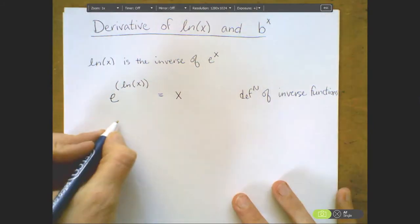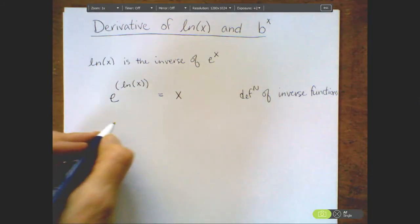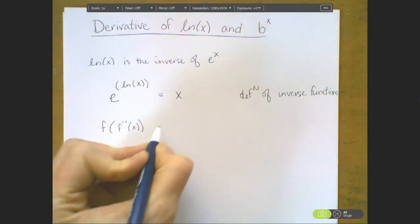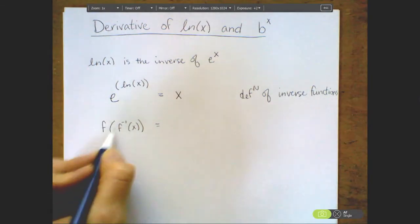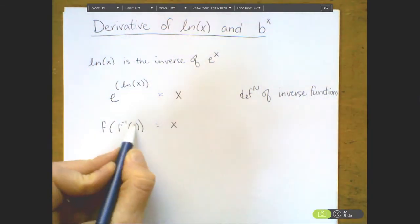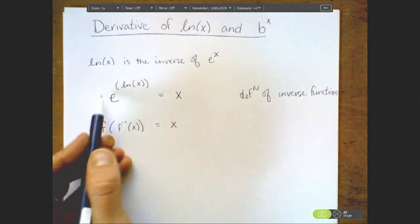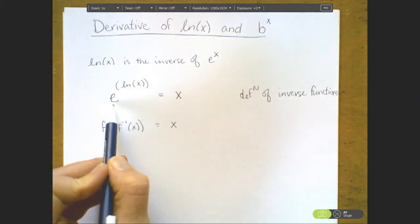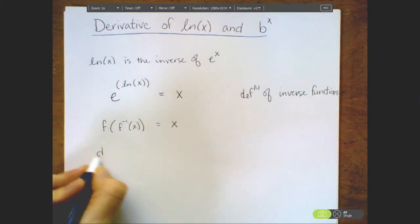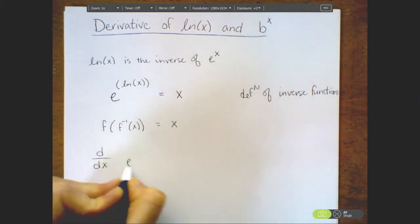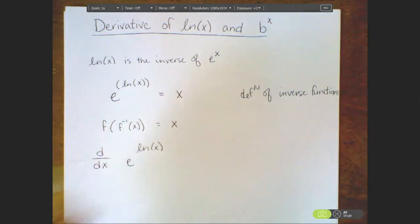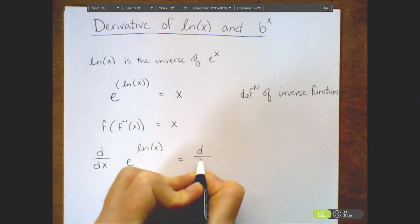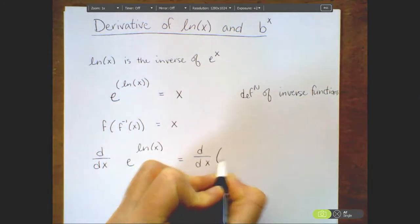I could write it another way: if I plug f inverse of x into my function f, the inner inverse function undoes the outer f function, and I end up with just the inside part, which is x. So we're going to apply implicit differentiation to find the derivative of natural log of x using this definition. We're taking the derivative of e to the natural log of x, and by implicit differentiation, I'm going to take the derivative of both sides.